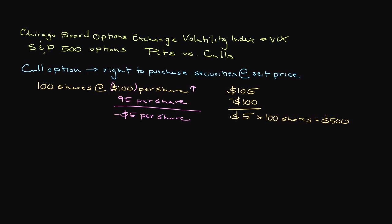The only reason that an investor would buy a call option is if they felt that the market was going to appreciate in value. As a result, a greater number of call options compared to put options will lower the numerical value of the VIX.